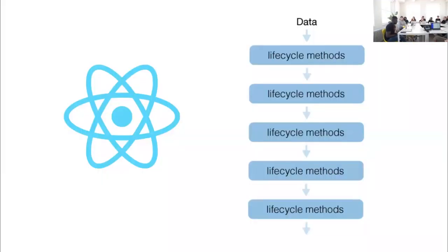React really changed how we think about developing applications. In React there's the concept of one-way data flow — the data usually only goes one way. For the most part when you develop your application, you have a top-level component and the data flows through your tree of components in only one direction. This makes it a lot easier to reason about the state and the data flowing through React.